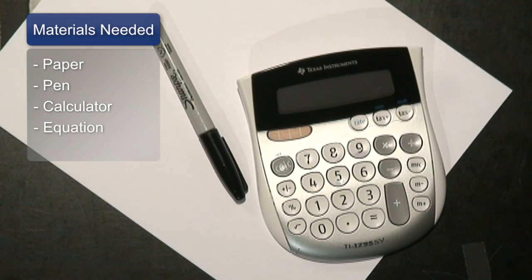You're going to need a pen, paper, and a calculator just to make the process easier. You're also going to need to know how much you weigh, how tall you are, and your age.